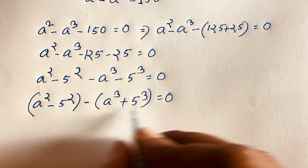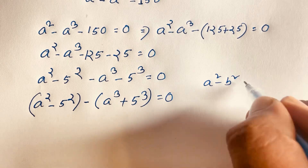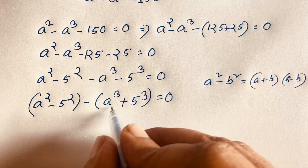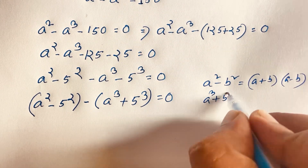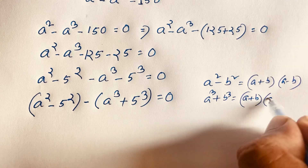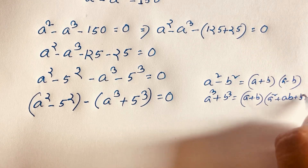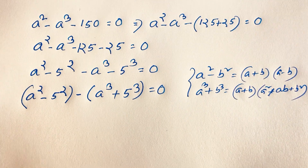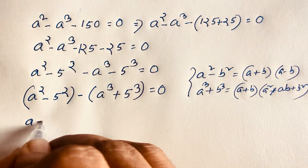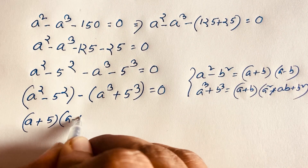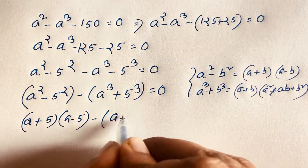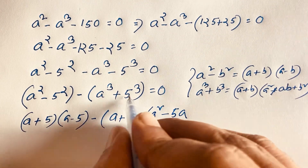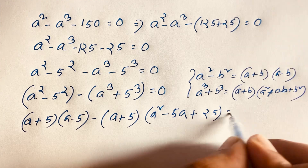Now you can see here is the formula. It will be a squared minus b squared equals (a plus b)(a minus b). And if you think about a cubed plus b cubed, so a cubed plus b cubed equals (a plus b)(a squared minus ab plus b squared). Applying this with b equal to 5: a squared minus 5 squared gives (a plus 5)(a minus 5), and a cubed plus 5 cubed gives (a plus 5)(a squared minus 5a plus 25), is equal to 0.